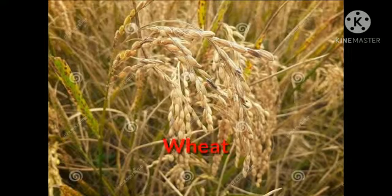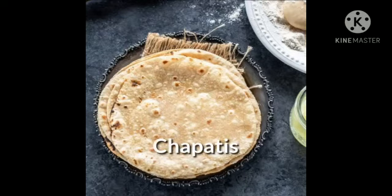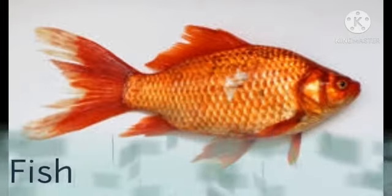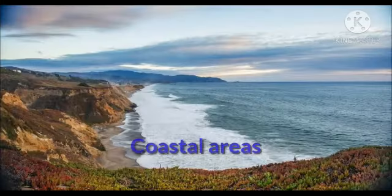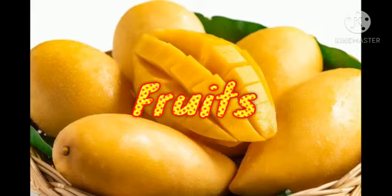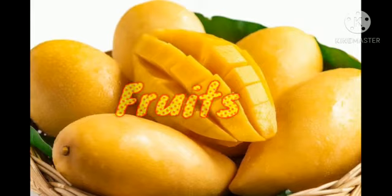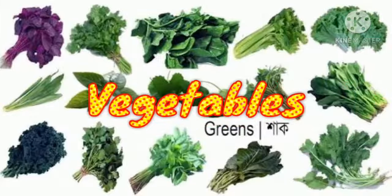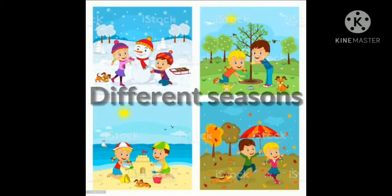Where wheat is produced, chapatis are eaten more. Fish is available in plenty in the sea, therefore coastal region people have a lot of fish in their diet. Fruits and vegetables are also dependent on seasons, so according to seasons we have to change our diet.